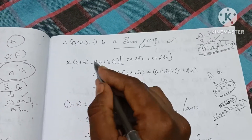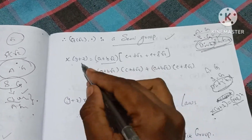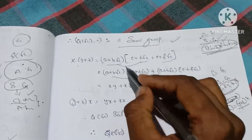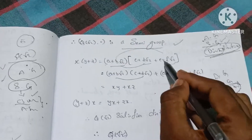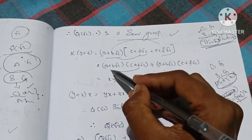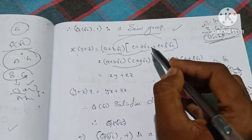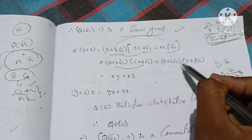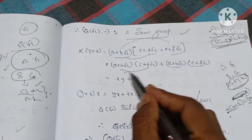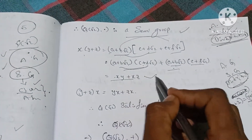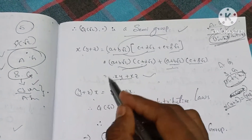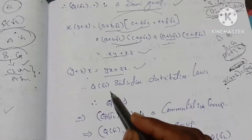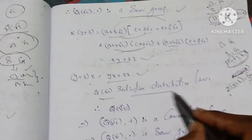Distributive law: x into (y plus z) equals x times y plus x times z. We verify: (a plus b root 2) into (e plus f root 2) for each combination. Similarly (y plus z) into x equals yx plus zx. The distributive law holds. Therefore Q(√2) satisfies the distributive law. Since Q(√2) with plus is a commutative group, Q(√2) with dot is a semigroup, and the distributive law holds, Q(√2) is a ring.